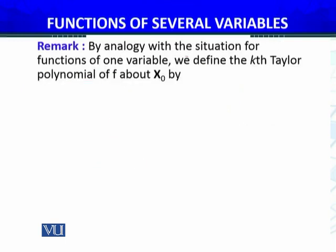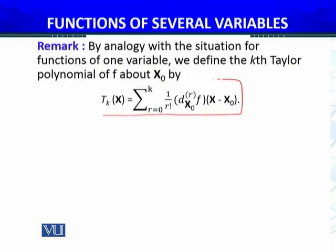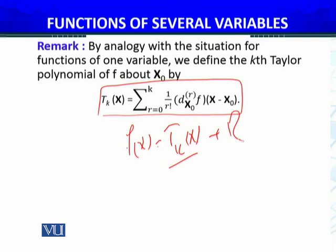By analogy with the situation for functions of one variable, we define the kth order Taylor polynomial of f about x-naught by this polynomial. Now this is the same polynomial, and Taylor series f of x is T_k(x), Taylor polynomial plus remainder r, which we have written in one variable here. Kth order differential, k plus 1th order, kth order here, remainder function of several variables.